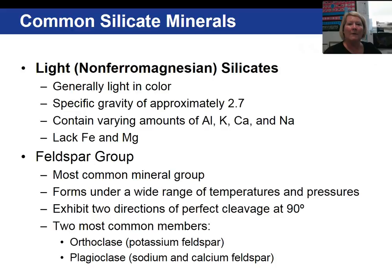Light or non-ferro magnesium silicate minerals do not have iron and or magnesium in them. Instead they have aluminum, potassium, calcium, and sodium, and that's why they are light in color. They are generally less dense than our ferro magnesium. The most common non-ferro magnesium silicate mineral in the earth's crust are the feldspar.